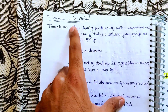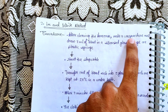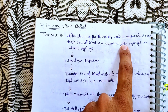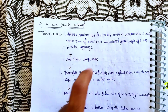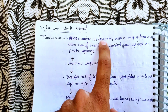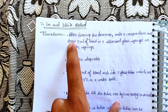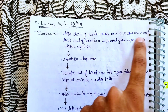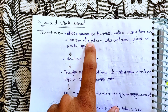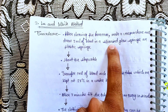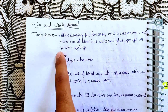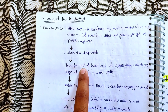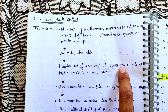The second method is the Lee and White Method. After cleaning the forearm, make a venous puncture and draw 3 ml of blood into a siliconized glass syringe or plastic syringe. Start the stopwatch and transfer 1 ml of blood into each of 3 tubes.